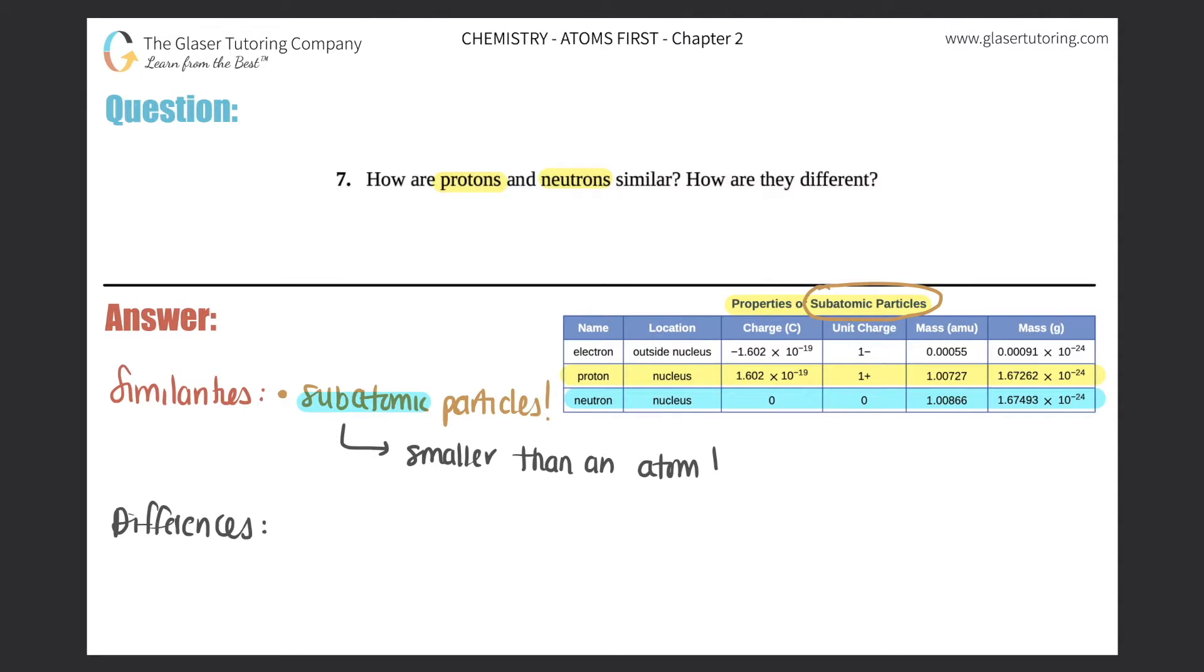Subatomic particles are smaller than the atom that's found on the periodic table. If we put many subatomic particles together—protons, neutrons and electrons—they will form an atom. It's like the little pieces that are put together to form the one whole puzzle which is the atom.